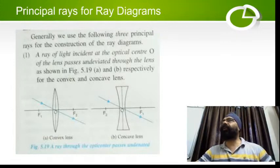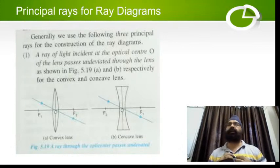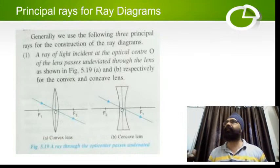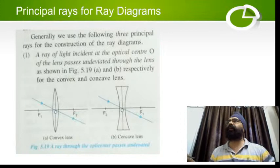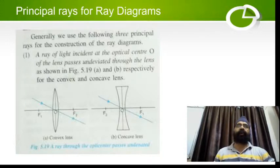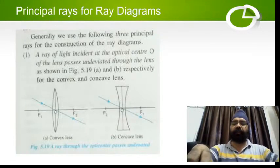When we did ray diagrams for mirrors in class 9, we found that there are certain basic rays which always go in a particular direction. If we use two of those rays, we can find the image position and tell everything about it. Here also we have the same basic rays. Let me go to the other screen and start.